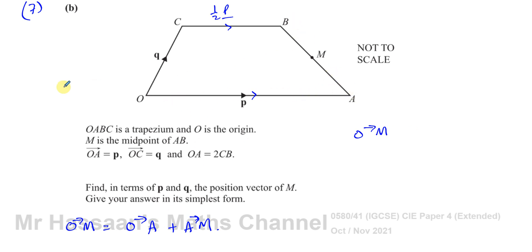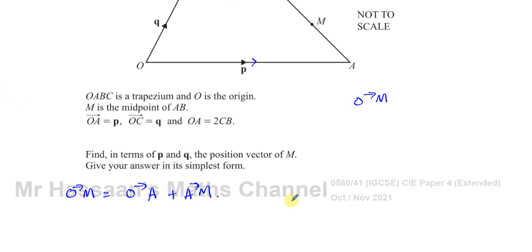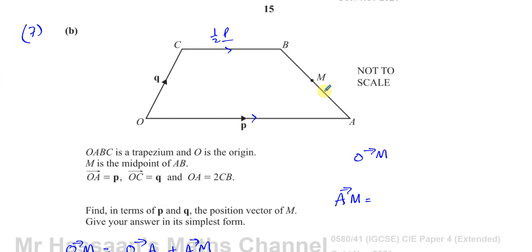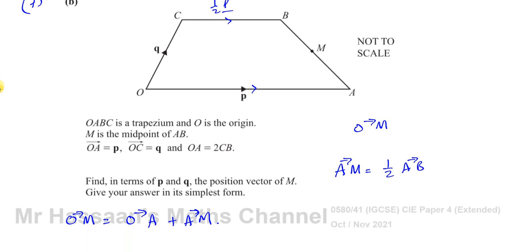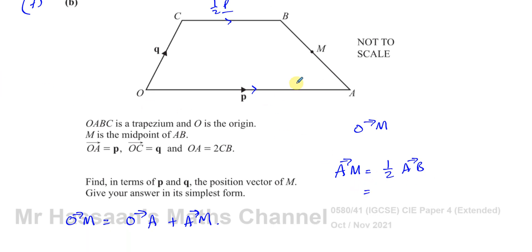Now what's A to M? A to M equals half of A to B, because M is the midpoint of AB. So A to M is ½ of A to B. To go from A to B in terms of vectors, you can go all the way around — that's minus p, plus q, and plus ½p.